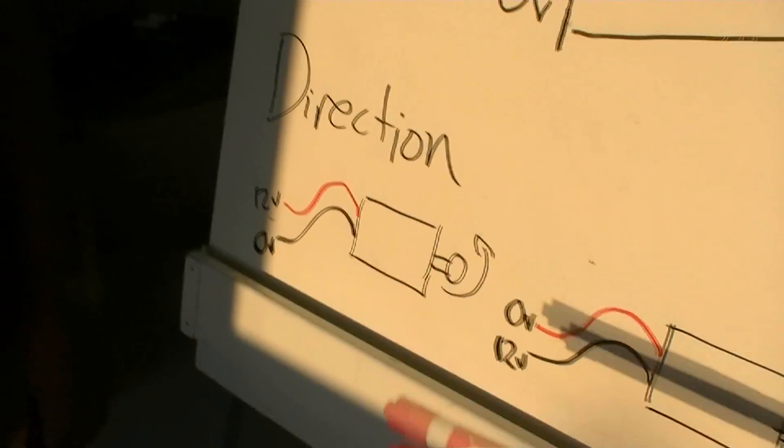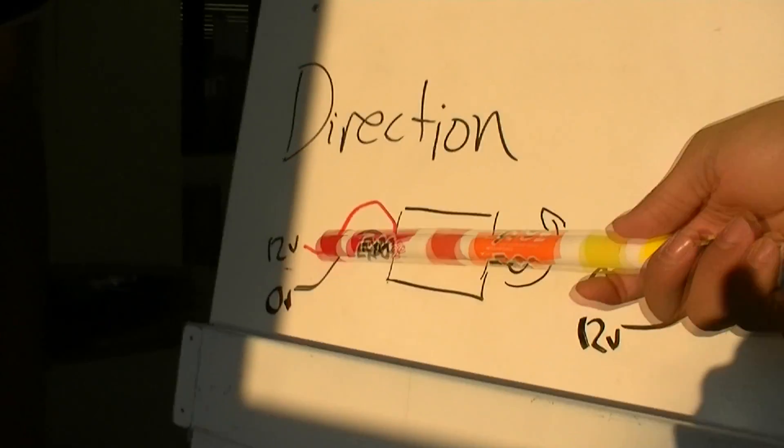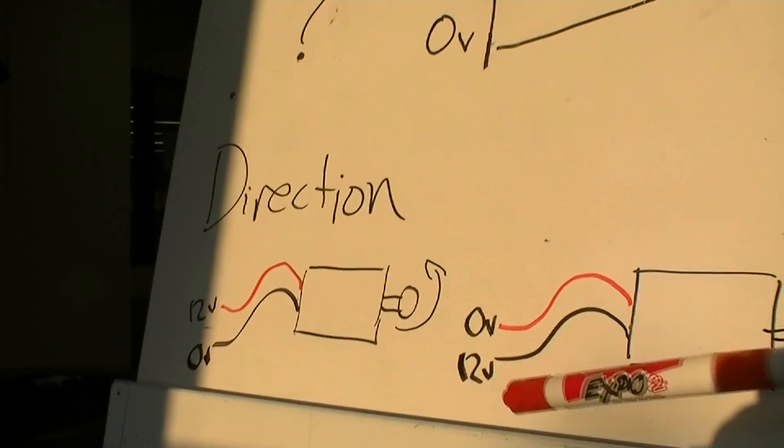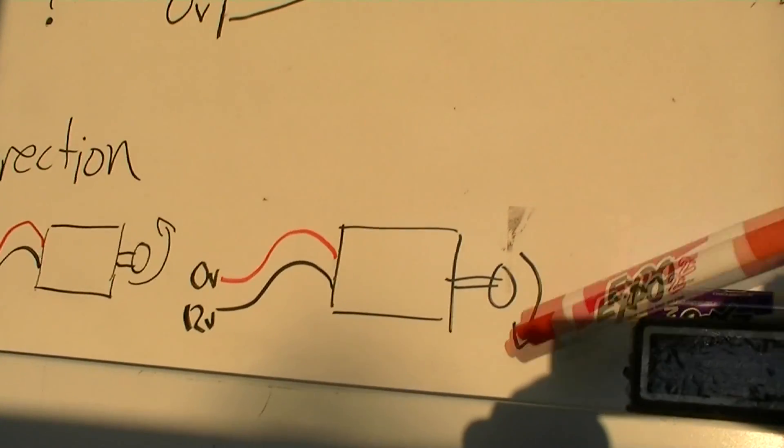PWM also controls the direction. So when 12 volts are applied to one wire, it'll go in one way. And then when 12 volts are applied to the other, it'll go the other way.